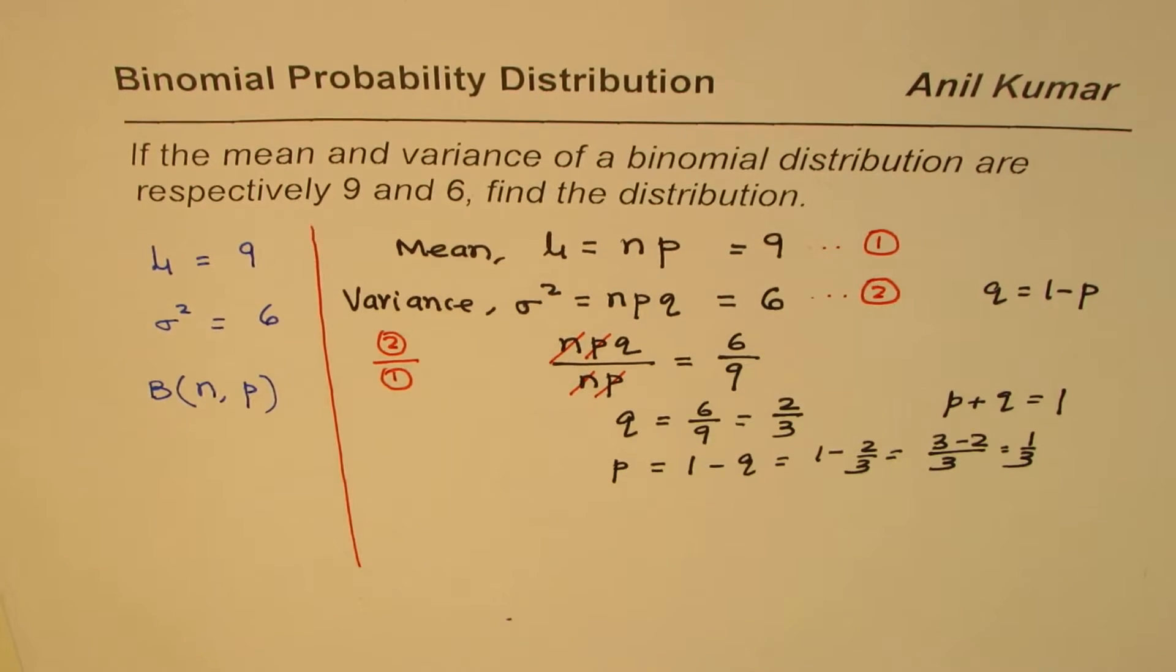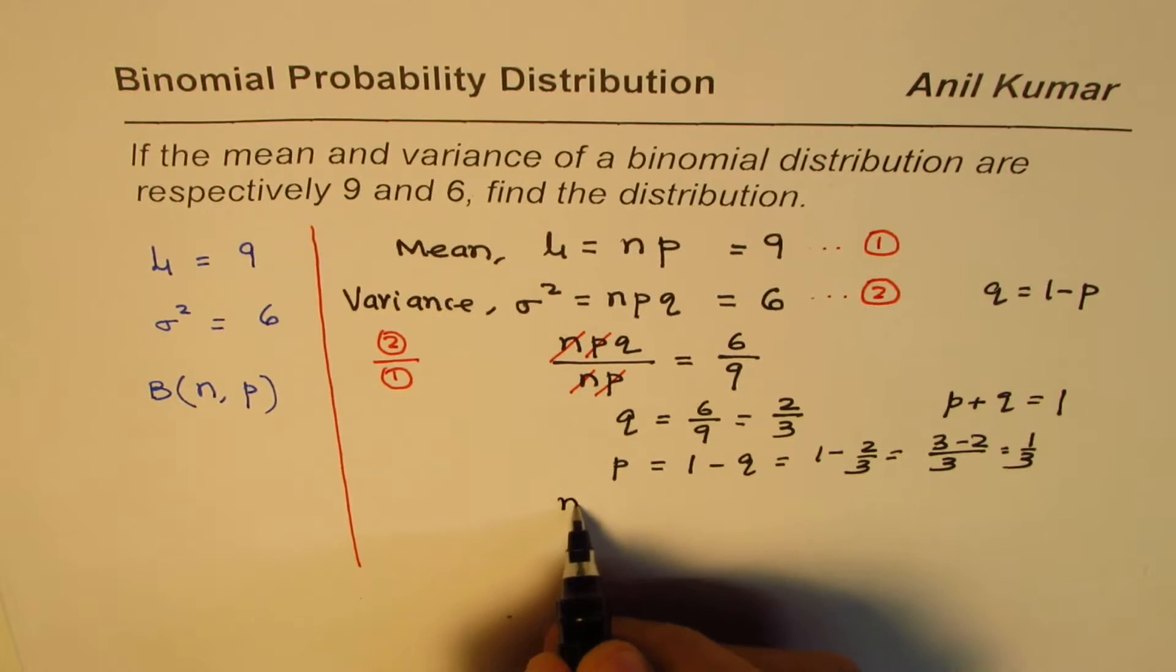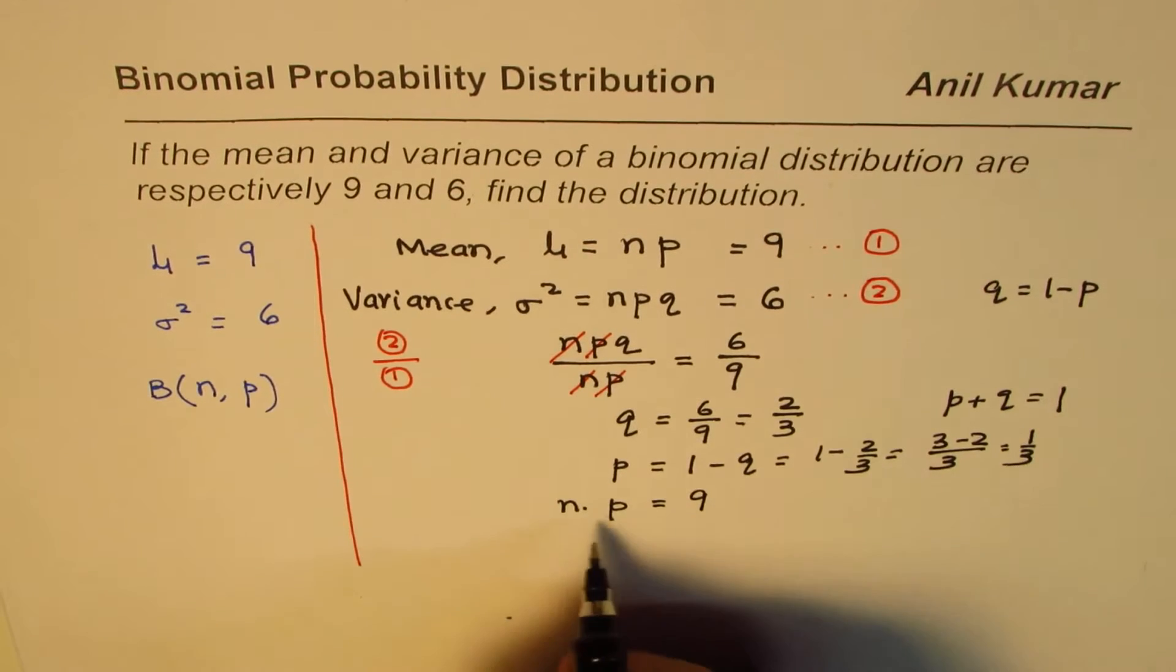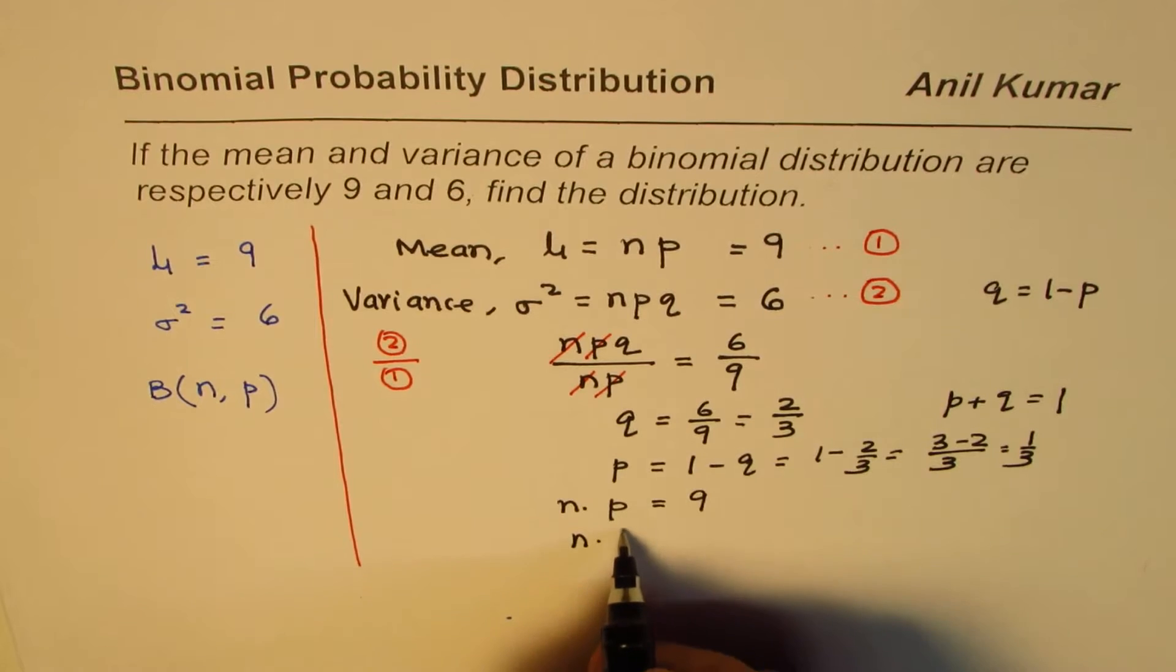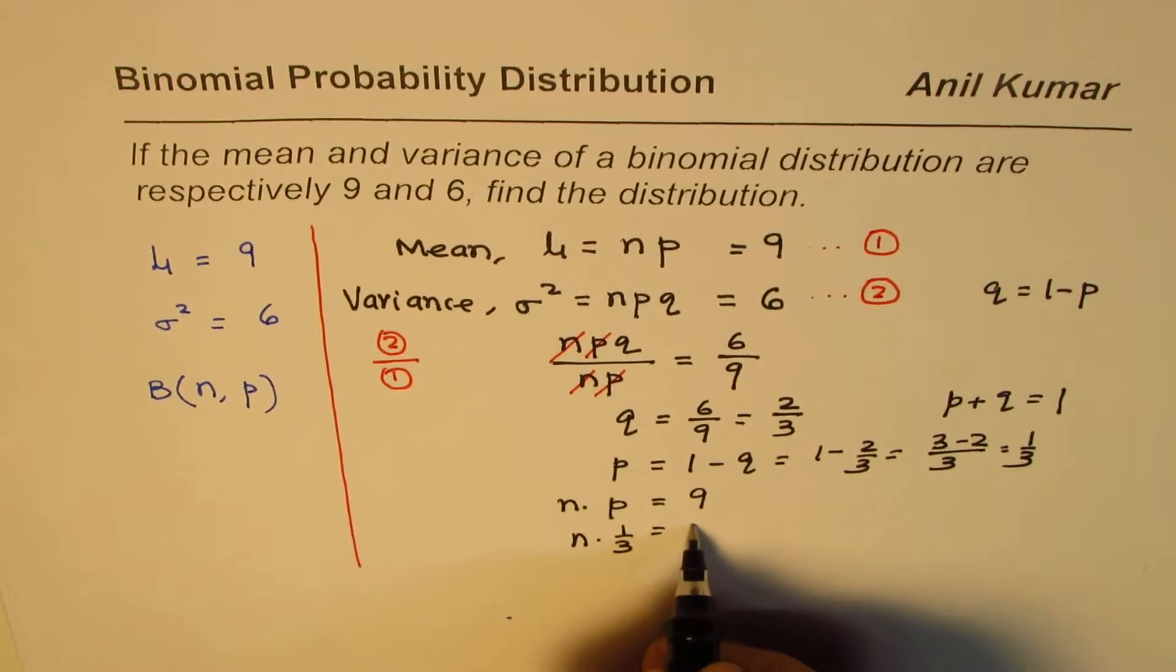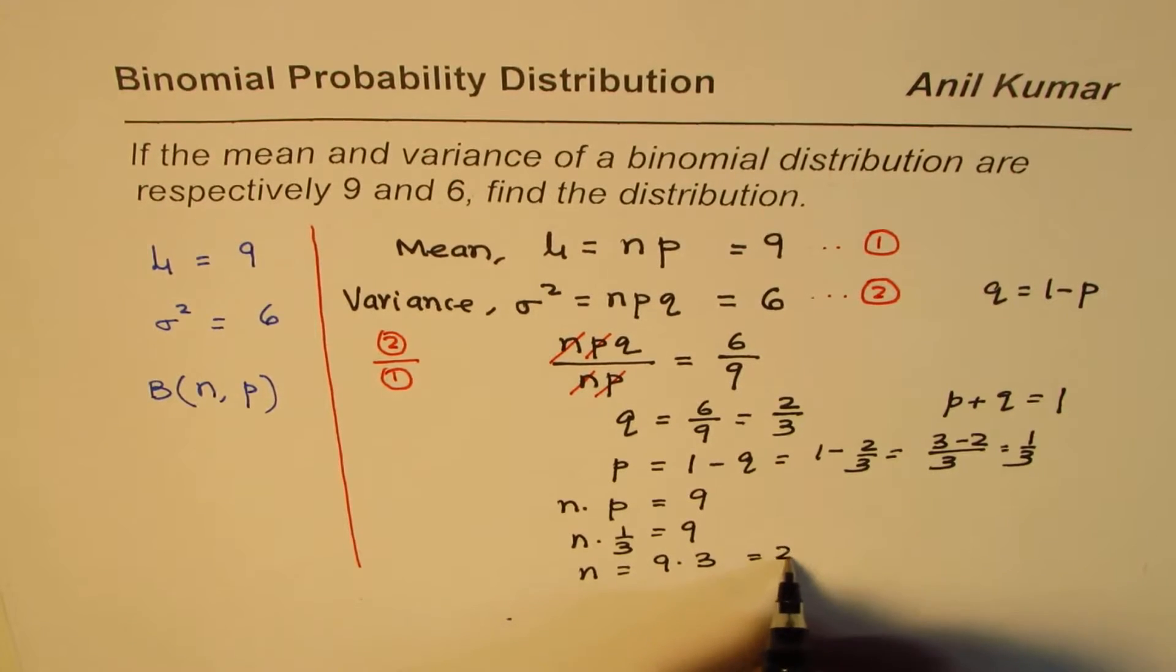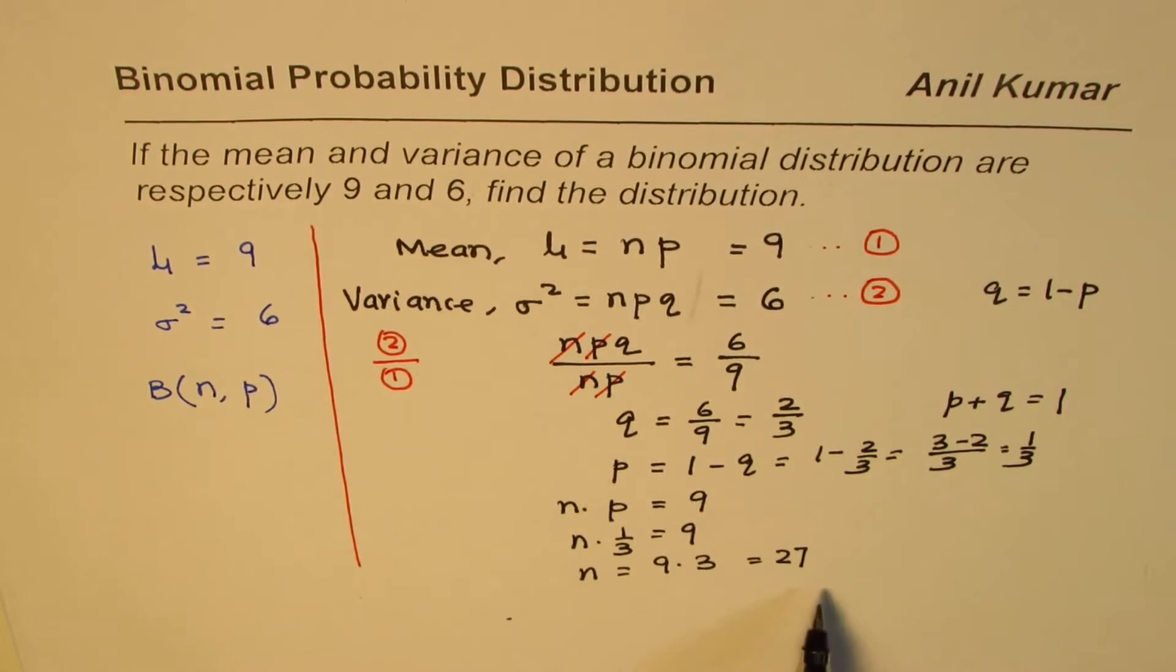We have found the value of p. If I substitute this value in the first equation, we get the value of n. The first equation is n times p equals 9. If I substitute 1 over 3 here, we get n times 1 over 3 equals 9, and from here we can say n equals 9 times 3, which is 27.